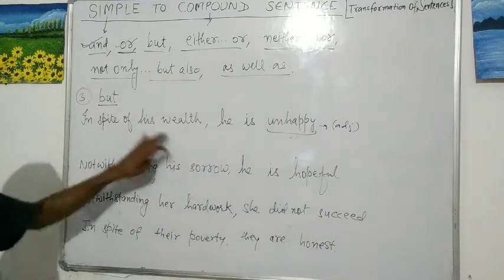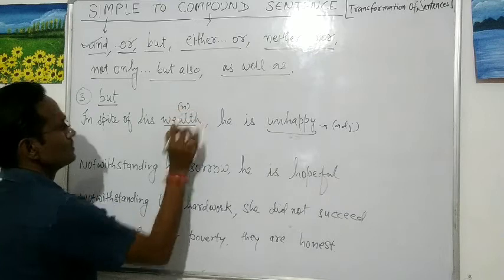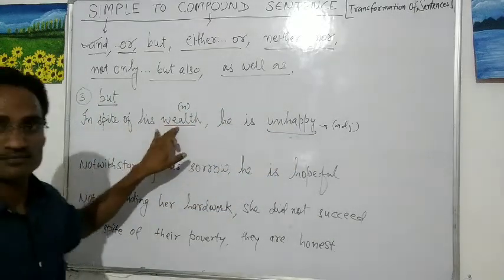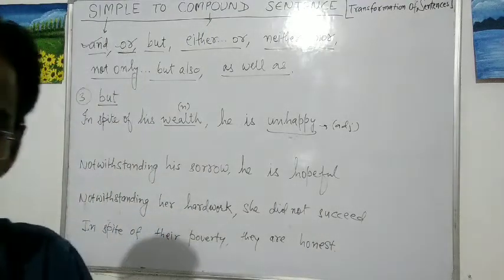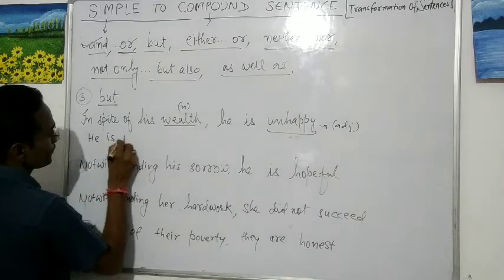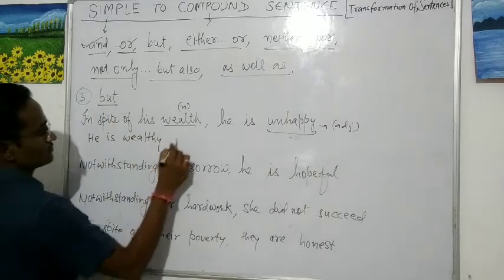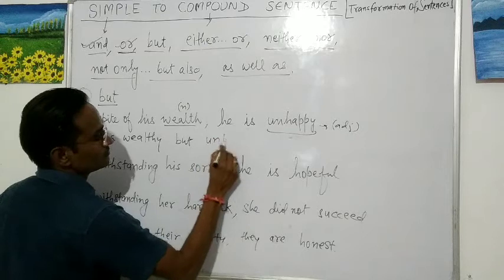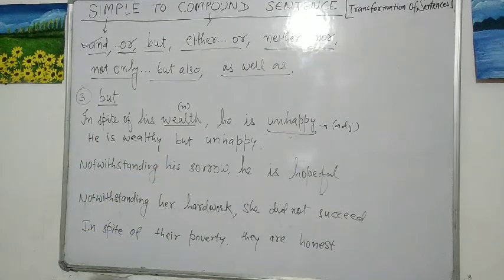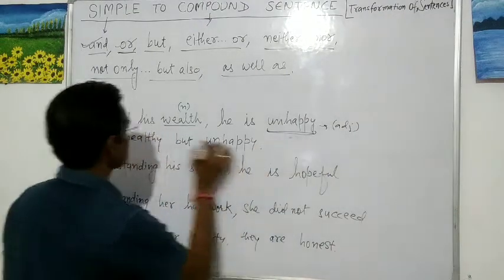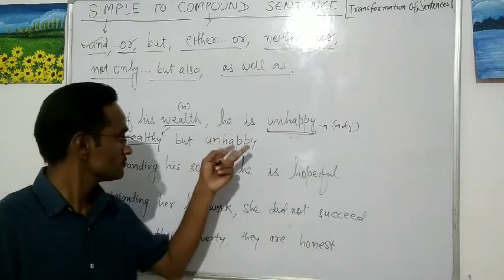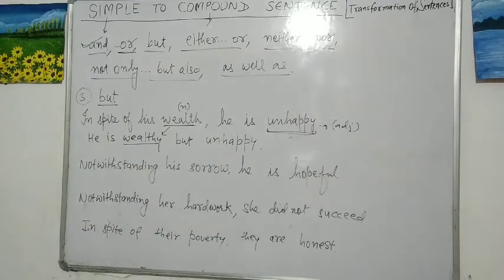'Unhappy' is an adjective. 'Wealth' is a noun. To form a compound sentence using 'but,' we need to change the noun 'wealth' into an adjective — so 'wealth' becomes 'wealthy.' The compound sentence becomes: 'He is wealthy but unhappy.' Both parts use adjectives joined by 'but.'